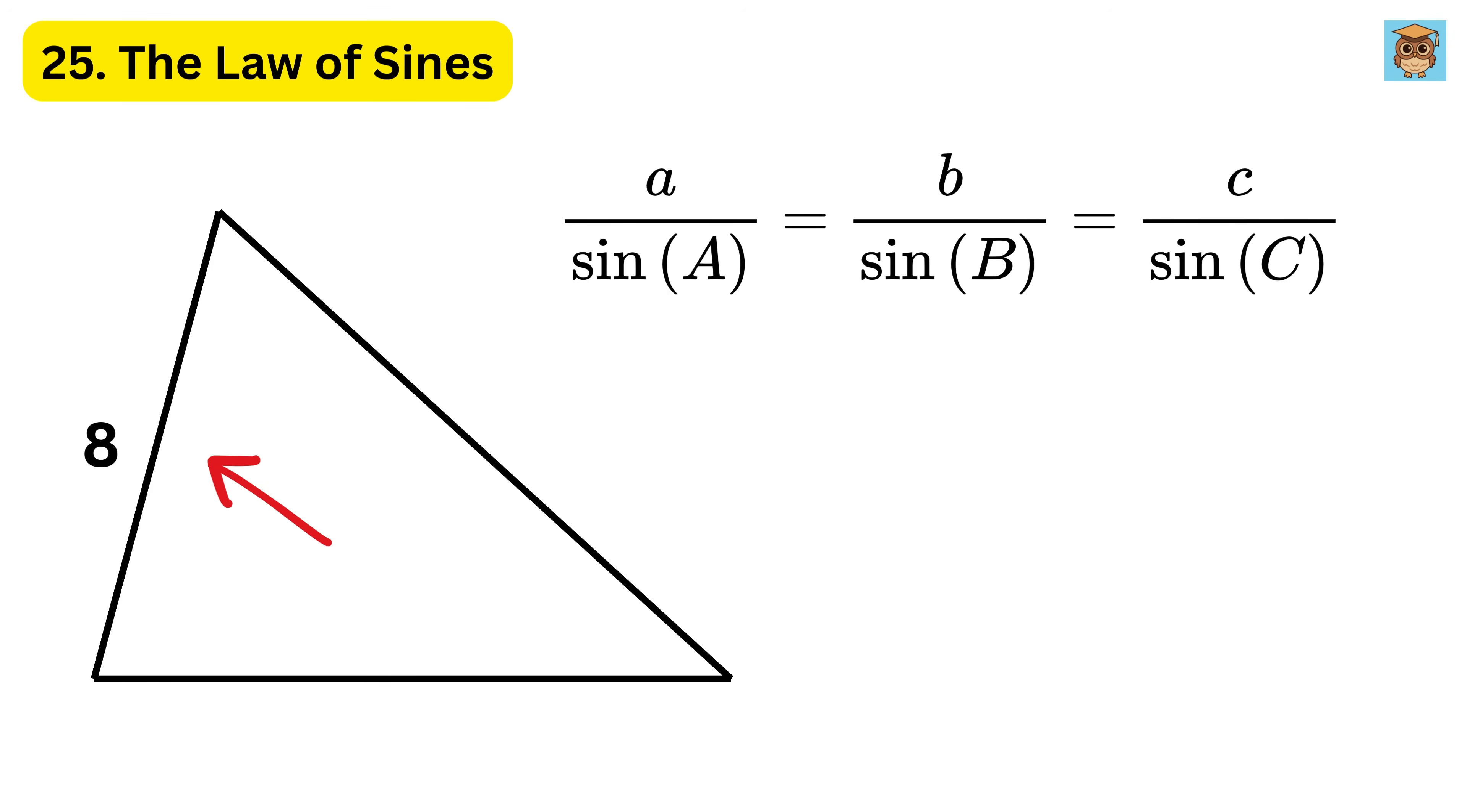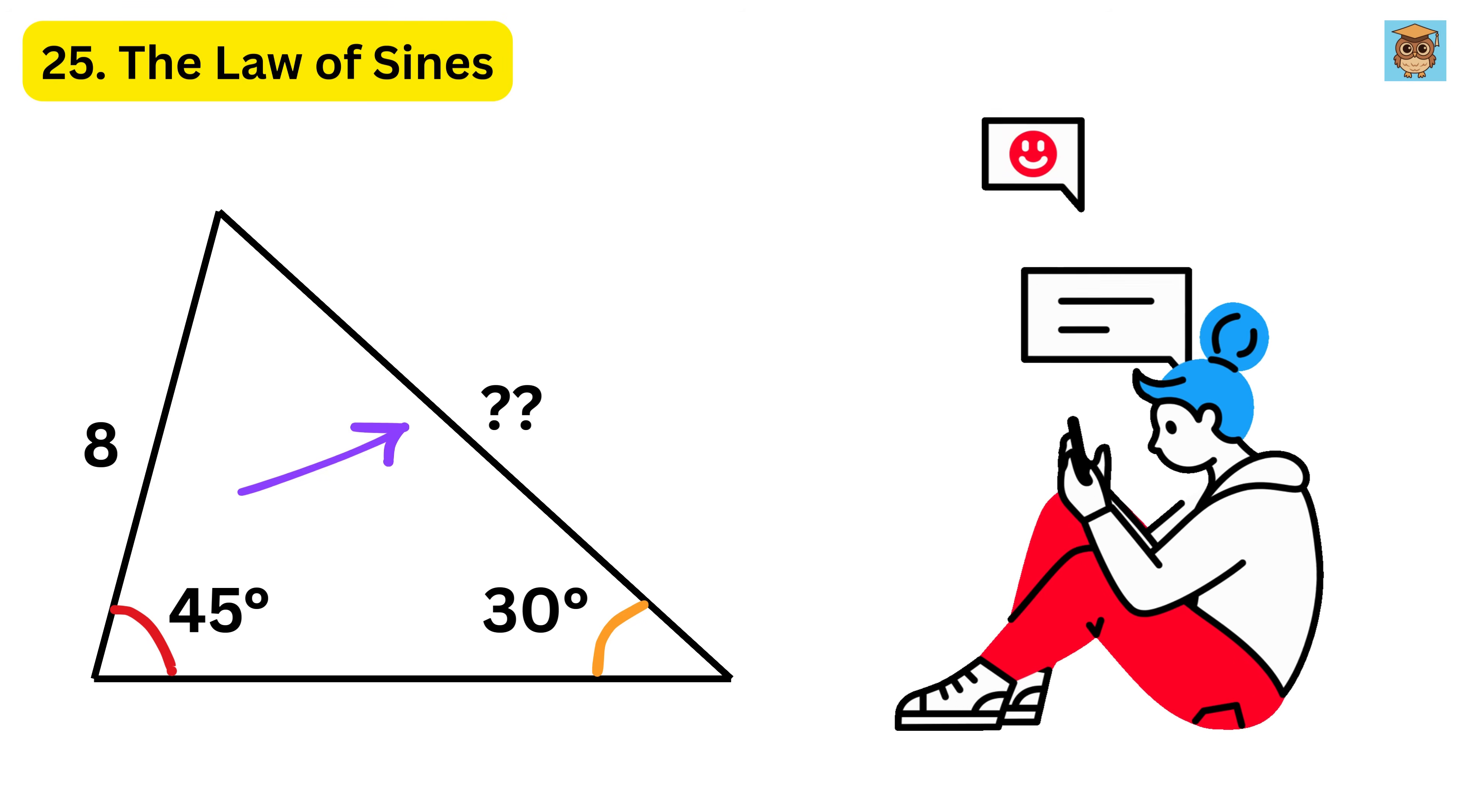Now if this side length of the triangle is 8 units, and this angle is 30 degrees, and this angle is 45 degrees, then what will be the value of length of this side? Let me know your answer in the comments.